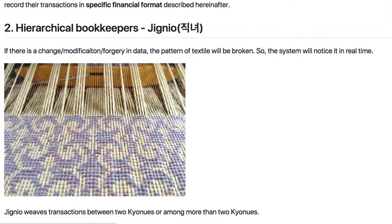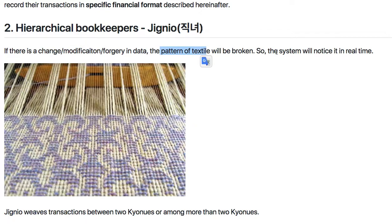As you can see, there is a pattern in the textile. If there is a change, modification, or tampering of data, the pattern of the textile will be broken and the system will notice it in real time. So there can't be data modification or tampering in operation — ever.